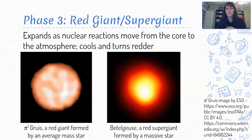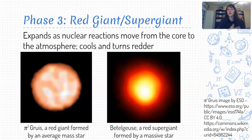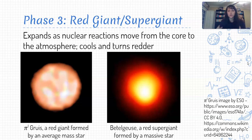Over time, stars start using up their hydrogen. The reactions start to move outward into the outer layers — starting in the middle where it's hottest, then moving outward. This causes our star to expand, and as it expands, it tends to cool down. Which is why it then turns into a red giant — as stars cool down, they get redder. If you've got an average-size star like our sun, it will turn into just a regular red giant. If you have a more massive blue star, it's going to turn into a red supergiant, which is obviously bigger and brighter than a regular red giant.